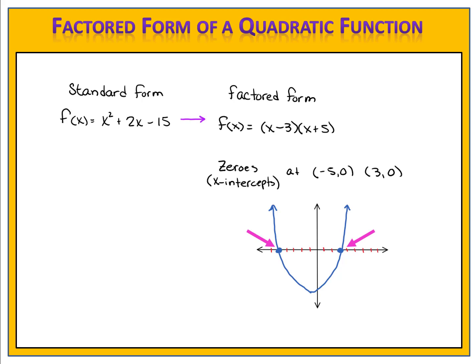Remember, the x-intercepts or zeros are the place where the graph will pass through the x-axis — this is where the output is zero. Before we get started, it's important to say that you need to feel comfortable with your factoring skills. If you're having trouble with factoring, be sure to go back and check out the videos on factoring before you proceed with this lesson.